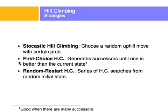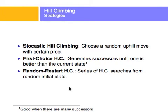Another algorithm that attempts to alleviate the problems of hill climbing is random-restart hill climbing, which basically says: start anywhere, and if you get stuck, randomly start again somewhere else. Or in parallel, run a series of hill-climbing searches each starting from a random state, and if none of them reaches an optimal solution, start randomly again. These are strategies to alleviate the local maximum/minimum problem.